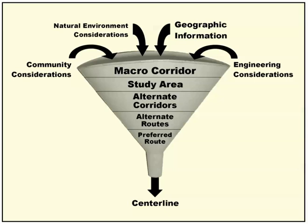The community considerations include things like human and cultural resources. The natural environment includes things like plants, animals, and water resources. The engineering considerations include physical constraints on the systems and features that would maximize location and minimize cost and schedule delays.